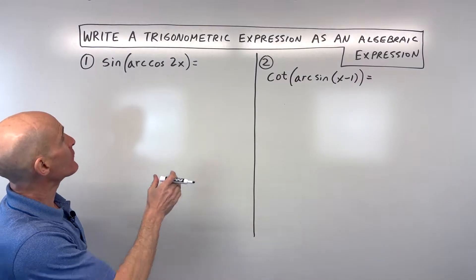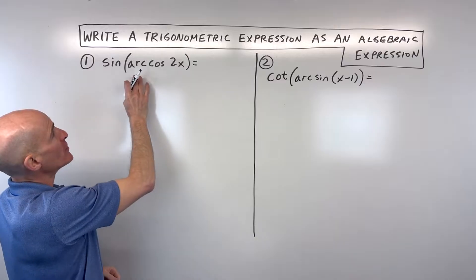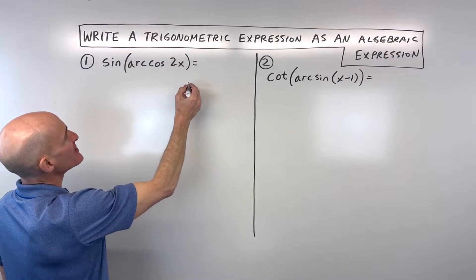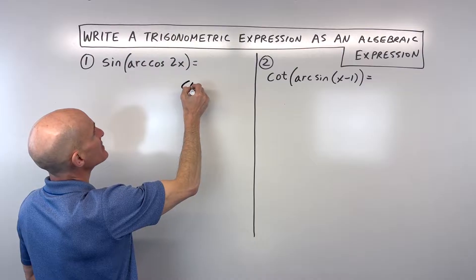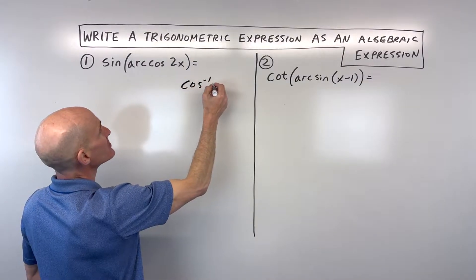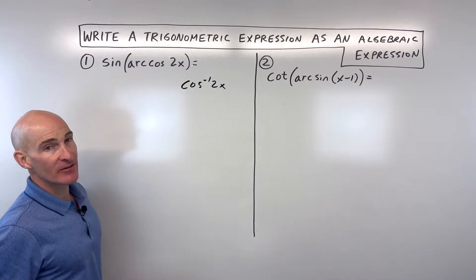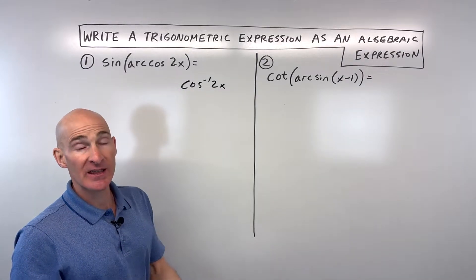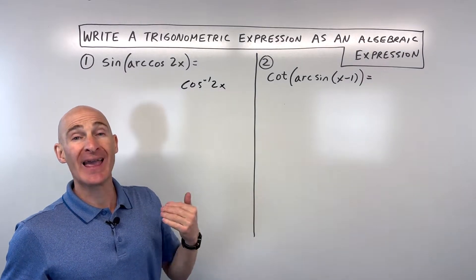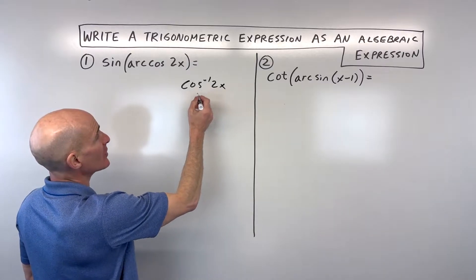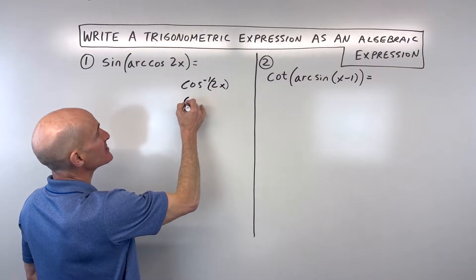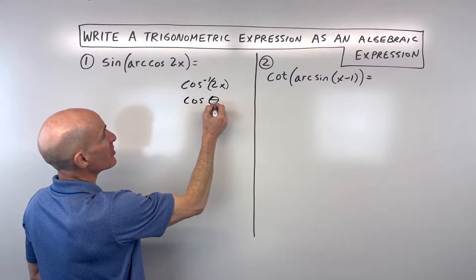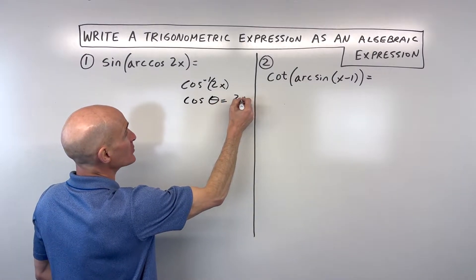Let's start from the inside and work our way out. When you look at this arc cosine of 2x, remember that's the same thing as the cosine inverse of 2x. And what does the cosine inverse tell us? It's saying that we're solving for the angle. So what this is really saying — cosine inverse of 2x — is: cosine of what angle, I'll call that angle theta, equals 2x.